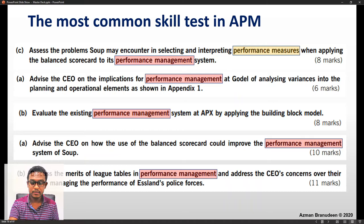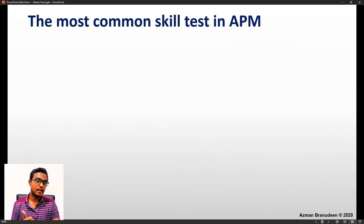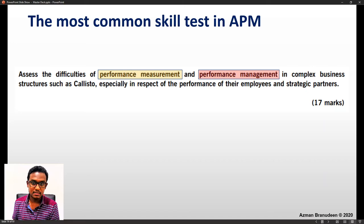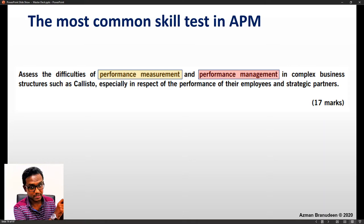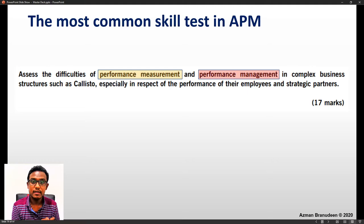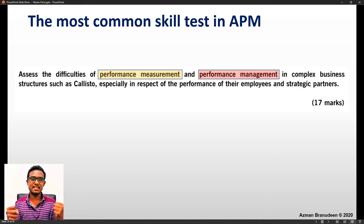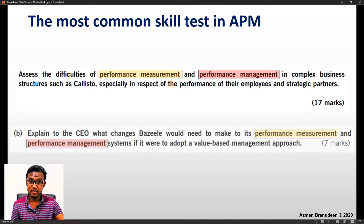As a P5 student, it's almost as if your foundation is built on this idea — knowing the extent to which you are familiar with performance management. In more recent papers, especially since the syllabus updates and changes to the examination framework, we see questions like: 'Assess the difficulties of performance measurement and performance management in complex business structures such as Calisto, especially in respect of the performance of their employees and strategic partners.' The examiner is now directly asking about both performance measurement and management together.